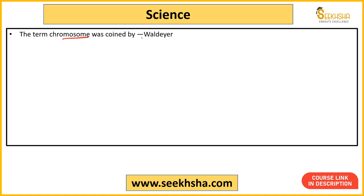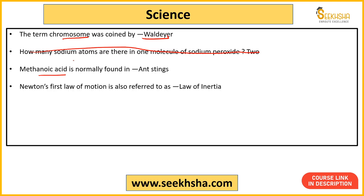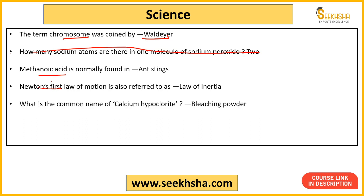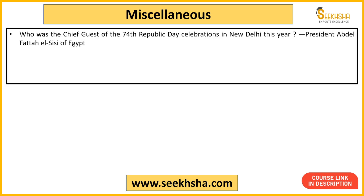The term 'Chromosome' was coined by Waldeyer. Methanoic acid is normally found in ant stings — that is why there is a burning sensation when an ant bites. Newton's First Law of Motion is also called the Law of Inertia. The common name of Calcium Hypochlorite is Bleaching Powder. The scientific name of Caustic Soda is Sodium Hydroxide. Damage caused in the human body by radiation is measured in RADS.